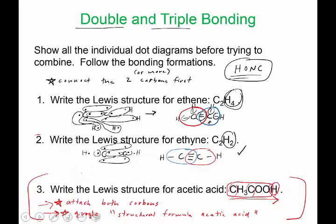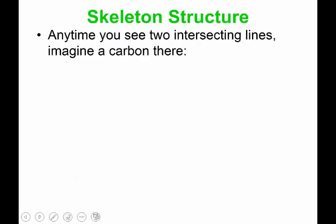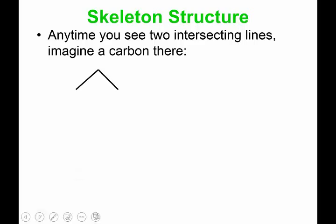Here's a precursor before we go into polarity of large molecules. What is a large organic molecule? It's stuff with multiple carbons attached together with varying functional groups on the outside. Let's look at how to analyze a Lewis structure of a large organic molecule. Anytime you see two intersecting lines in what's called a skeleton structure, imagine a carbon being there.